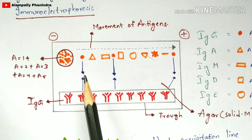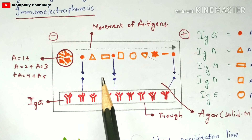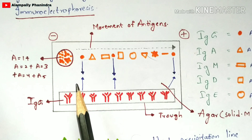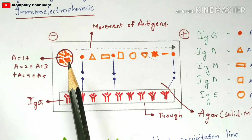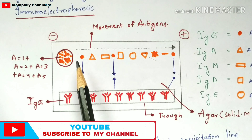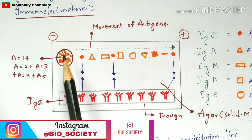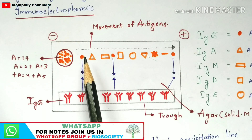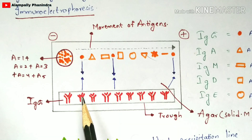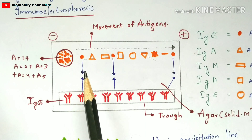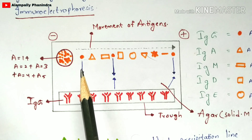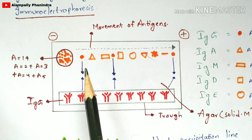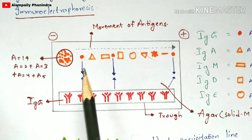The precipitation line appears white in color. When the immunologist sees this white precipitation line, they can confirm the presence of that particular antigen in the sample — which may be a serum sample from a human or animal case. If the white precipitation line is formed, the result is positive; if no precipitation line is formed, the result is negative.